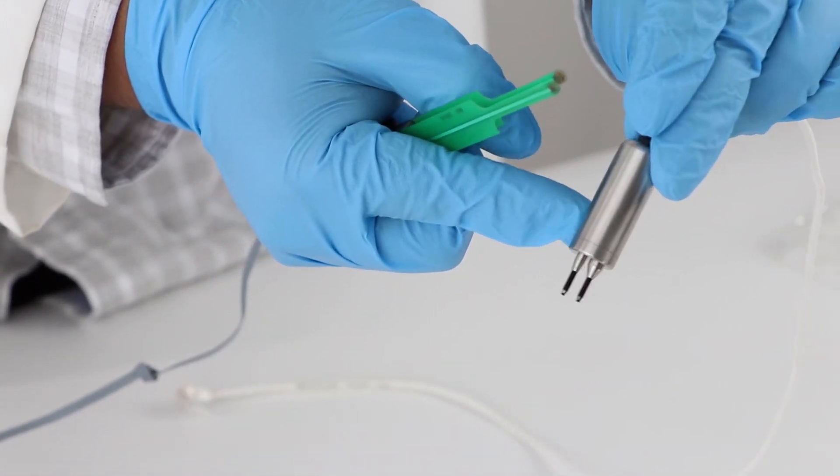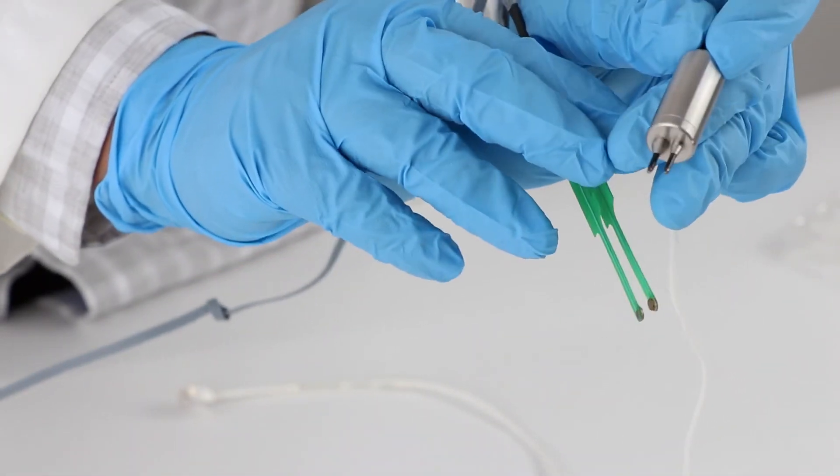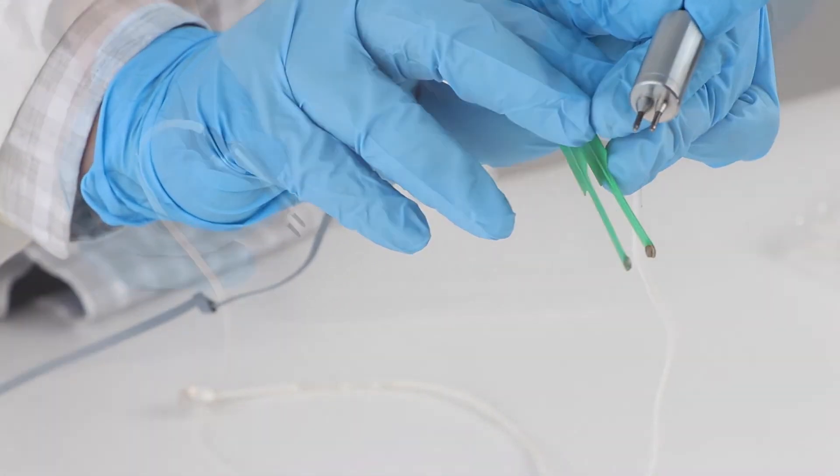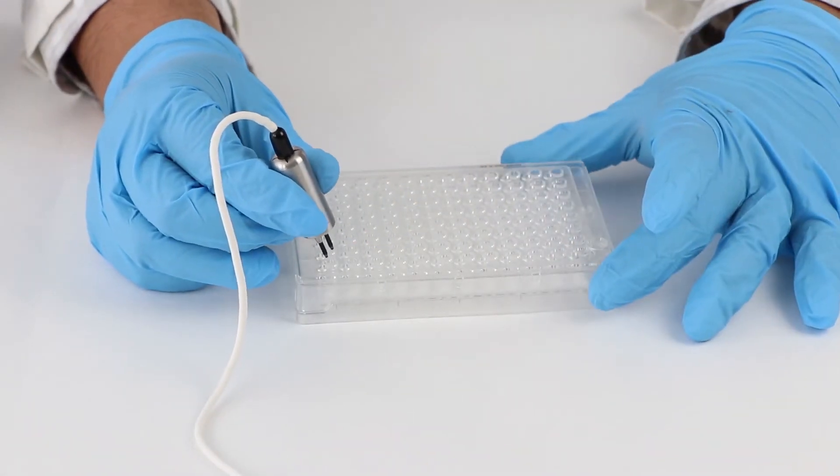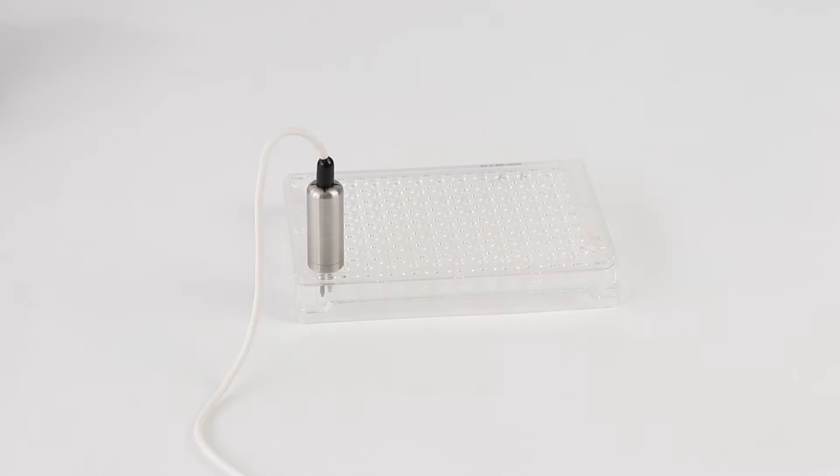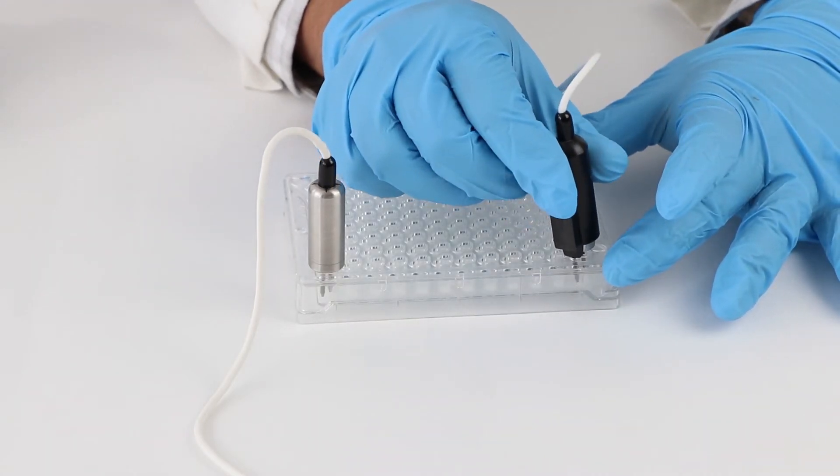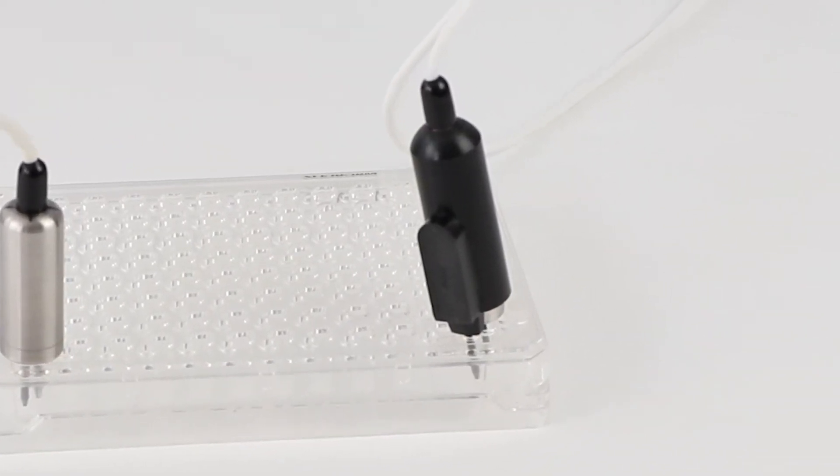These electrodes may only be used with specific well plates containing permeable membranes. The STX100 has several options which are compatible with specific cell culture plates. For example, the STX100M may be used with the Millipore 96 well plate. You cannot use an STX100F with this plate. Choose the electrode according to your requirements.